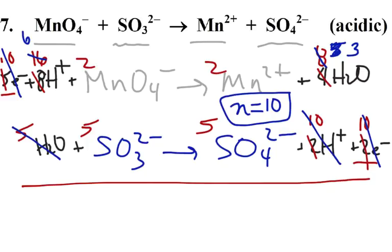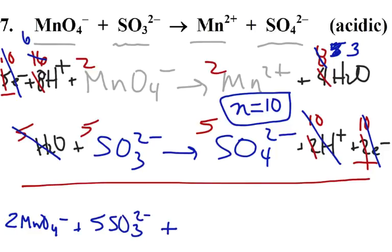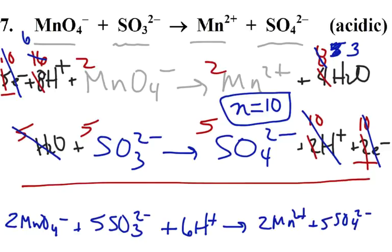It's messy, but let's see if we can get this. We have two MnO4 minuses and five SO3 two-minuses, plus we have six H pluses, and on the right we have two Mn two-pluses, and five SO4 two-minuses, and three waters. The fact that this is acidic really comes down to the fact that in our equation we have some H pluses in there, and that's fine.